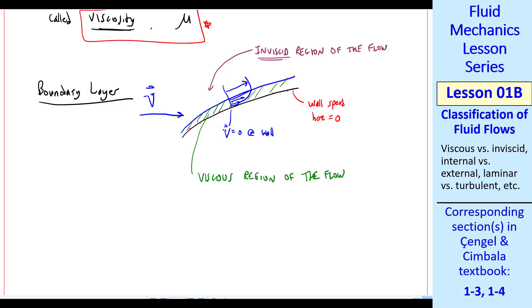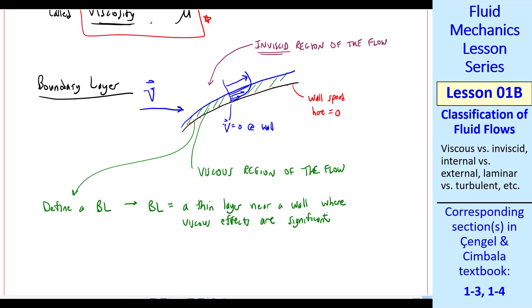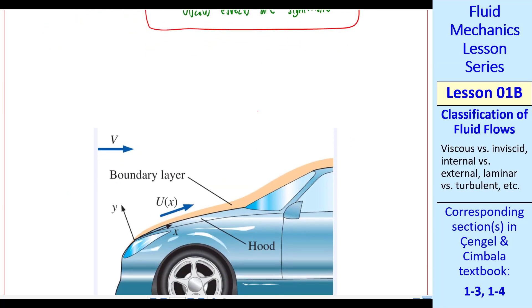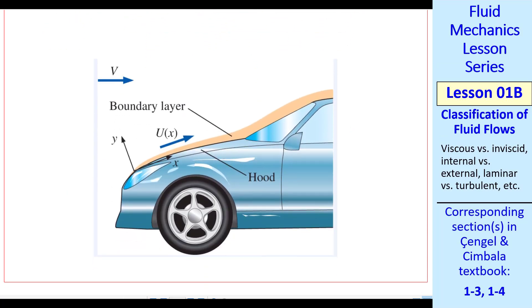In terms of regions, this region inside the boundary layer is a viscous region of the flow. Whereas out here, away from the wall, we can approximate this as an inviscid region of the flow. Again, keep in mind that inviscid does not mean the fluid has no viscosity. All fluids have viscosity. It's just that those viscous effects are not significant in that region. In fact, we can define a boundary layer, which I will from now on abbreviate as just BL. Boundary layer is defined as a thin layer near a wall where viscous effects are significant.